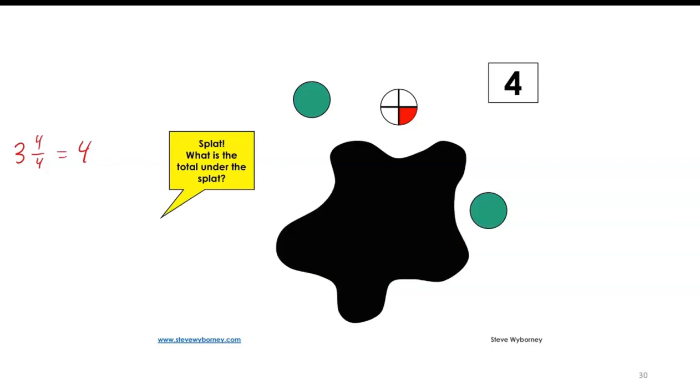Now, splat. Imagine part of it is covered up. The question is what is the total underneath the splat? There are a number of ways you can go about it, but what it really amounts to is that the whole thing is four, and what's showing is two and one fourth.